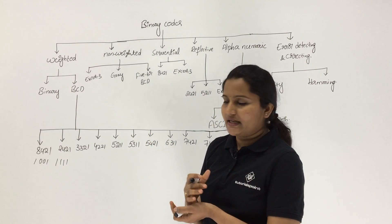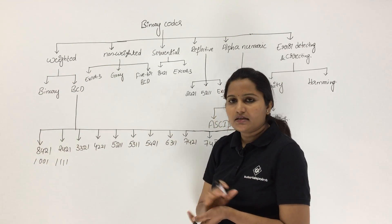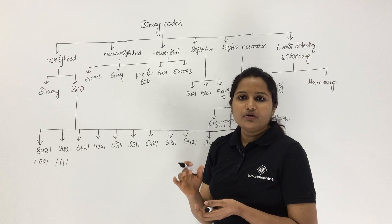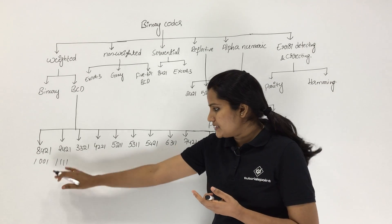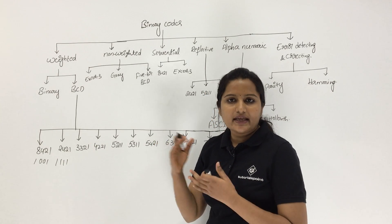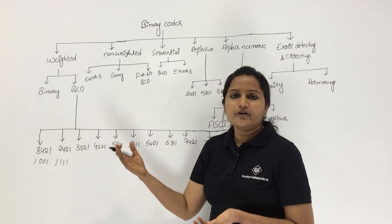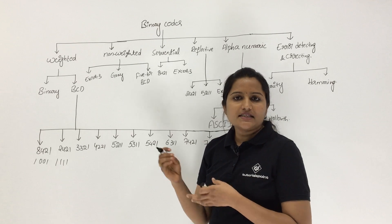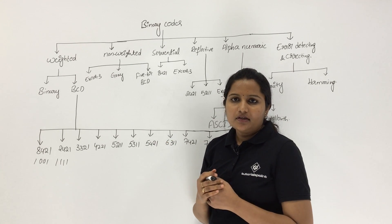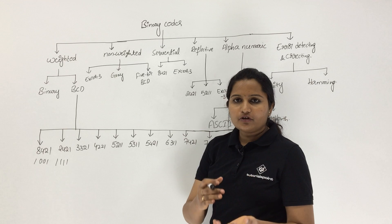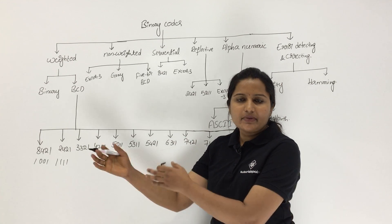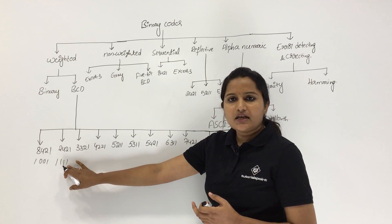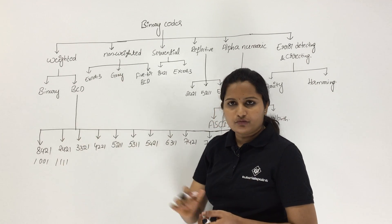In exams, they may ask: if 9 equals 1111, which code is it? They will give possibilities like 8421, 2421, and other codes. The answer is: 1111 is equivalent to 9 in the 2421 code.